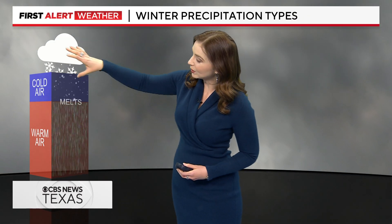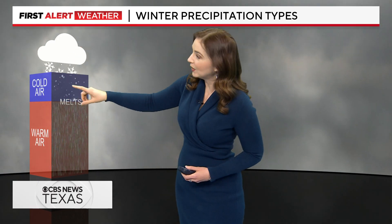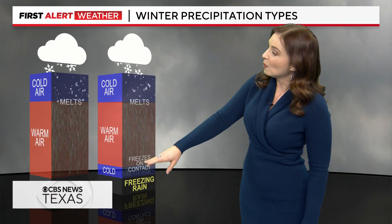With rain, you have your cloud where precipitation comes out frozen in cold air, but then there's a warm column of air below it, so it's melting by the time it reaches the surface.